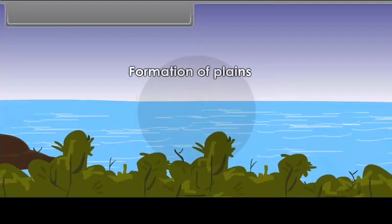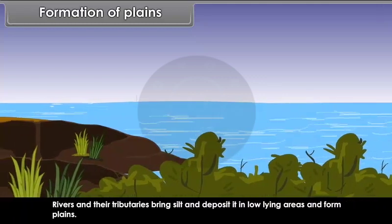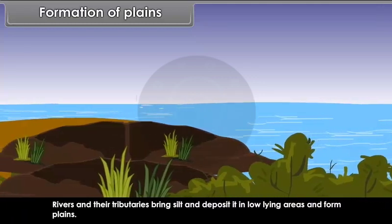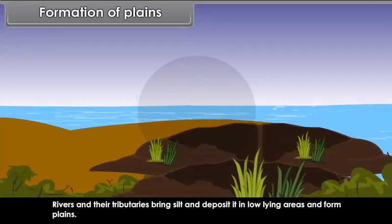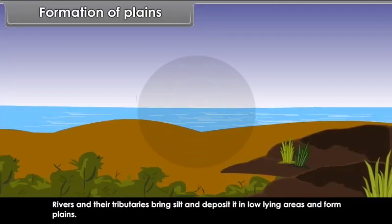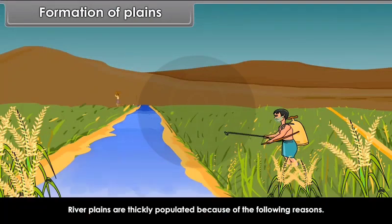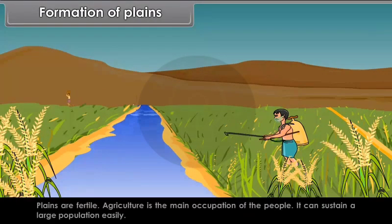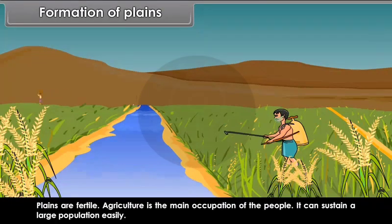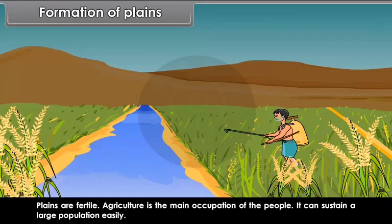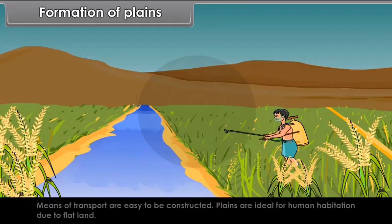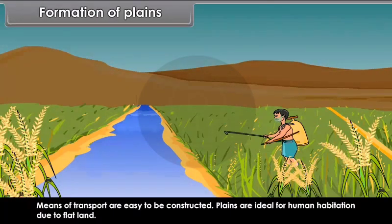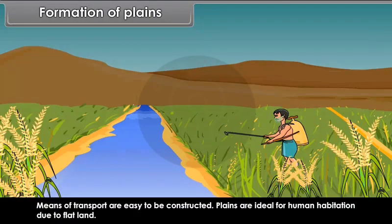Formation of Plains. Rivers and their tributaries bring silt and deposit it in low-lying areas to form plains. River plains are thickly populated because they are fertile and agriculture — the main occupation — can sustain a large population easily. Means of transport are easy to construct, and plains are ideal for human habitation due to flat land.